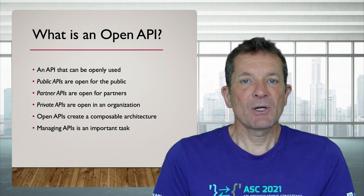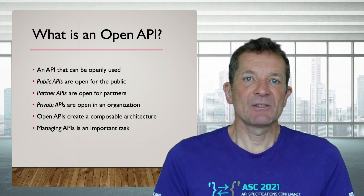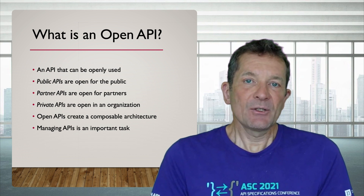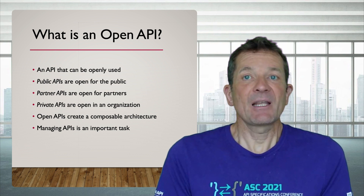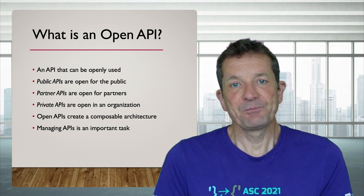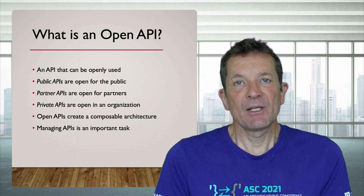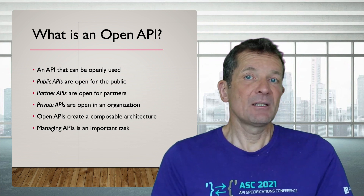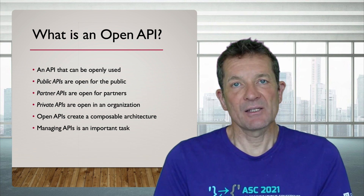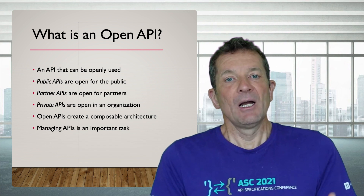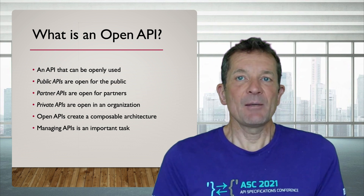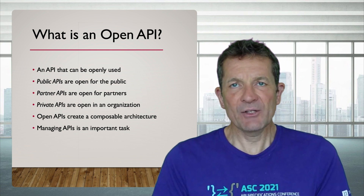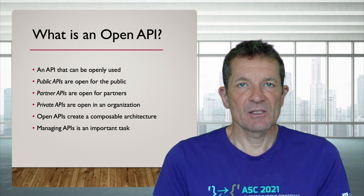With that definition of what an API is, let's dive a little deeper into what an open API is. You could say it's an API that can be openly used. There are three different levels of openness that are distinguished. One level is public APIs, meaning anybody can use it — oftentimes you have to register, but in principle, anybody can use this API.